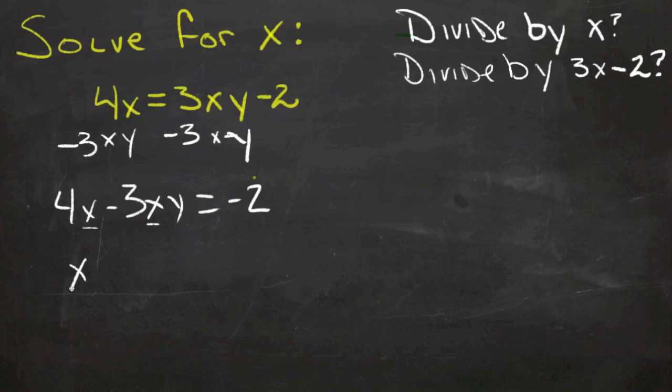We'd have an x outside and 4 minus 3y inside. And that's because this term is exactly the same as this, right? If I took x times 4, I'd get 4x, and x times negative 3y would be negative 3xy. So I haven't changed, I've just rewritten it.